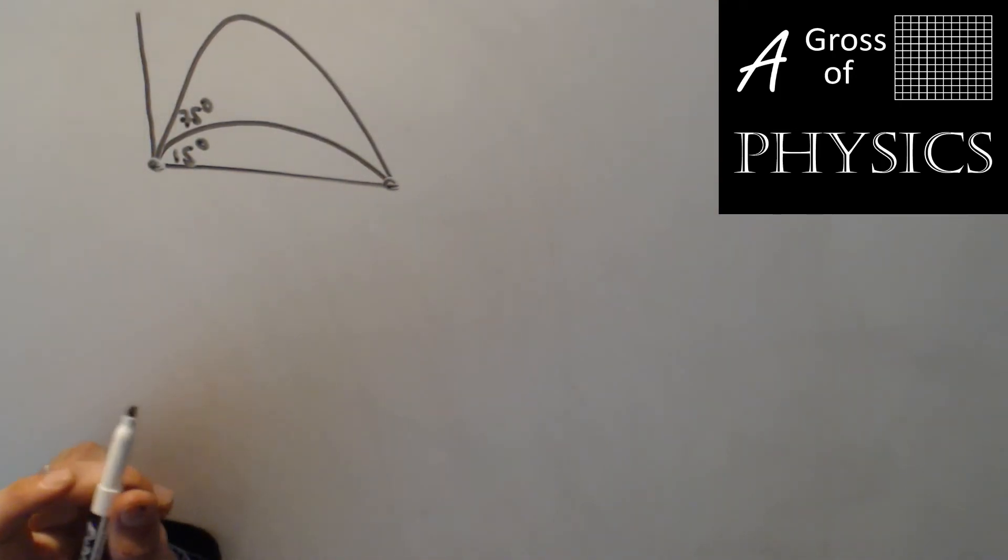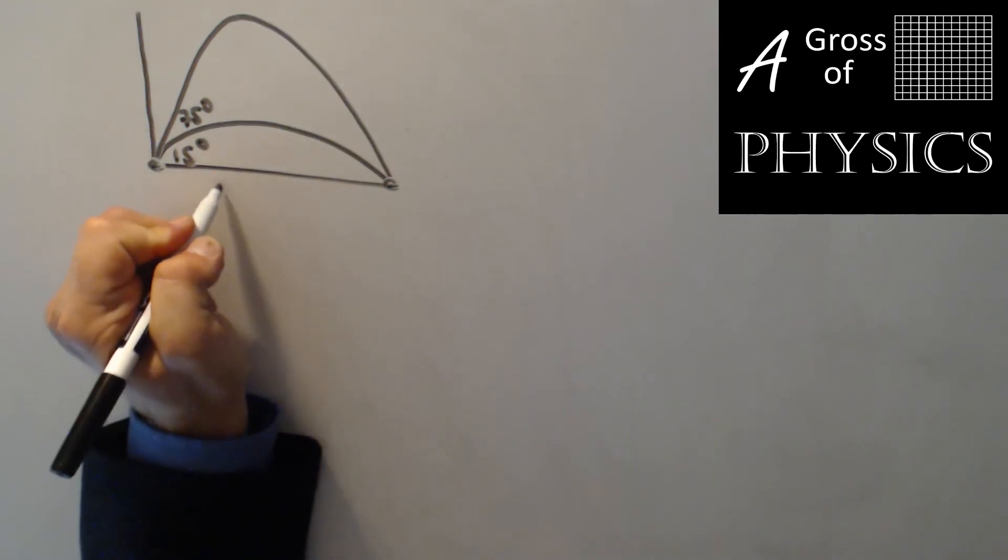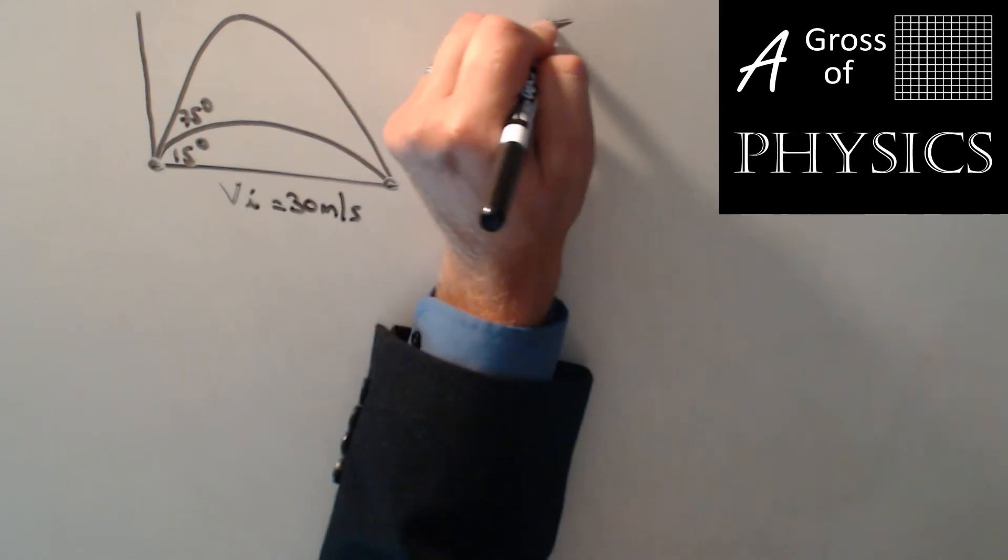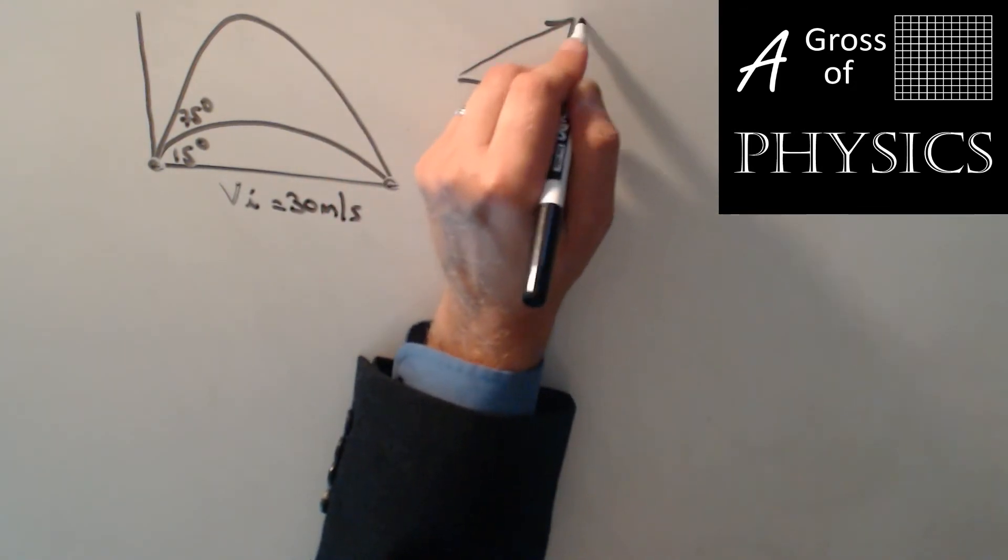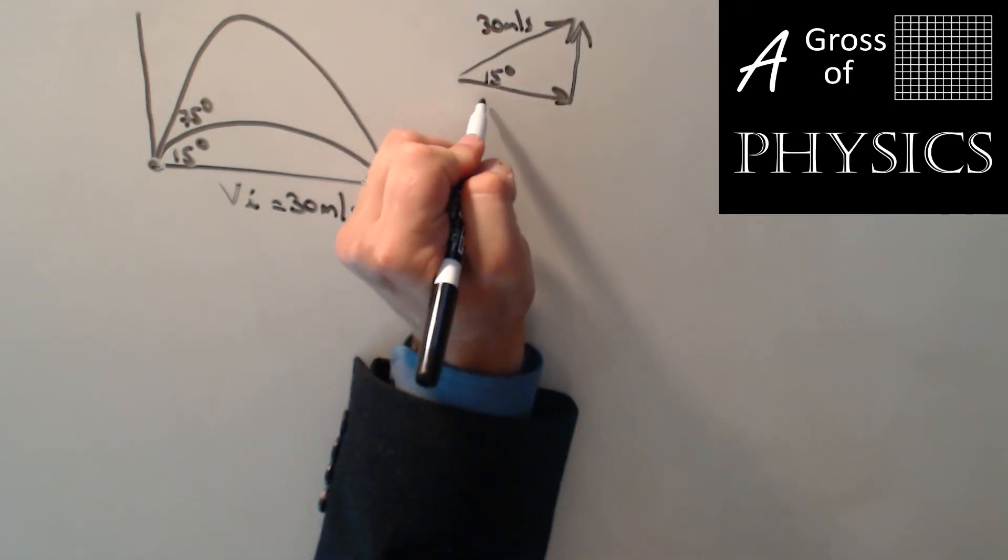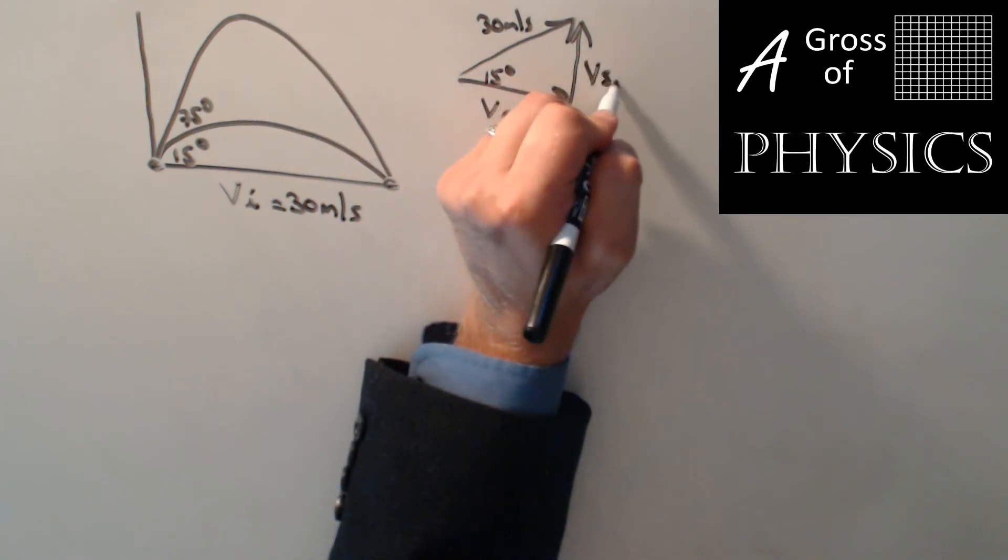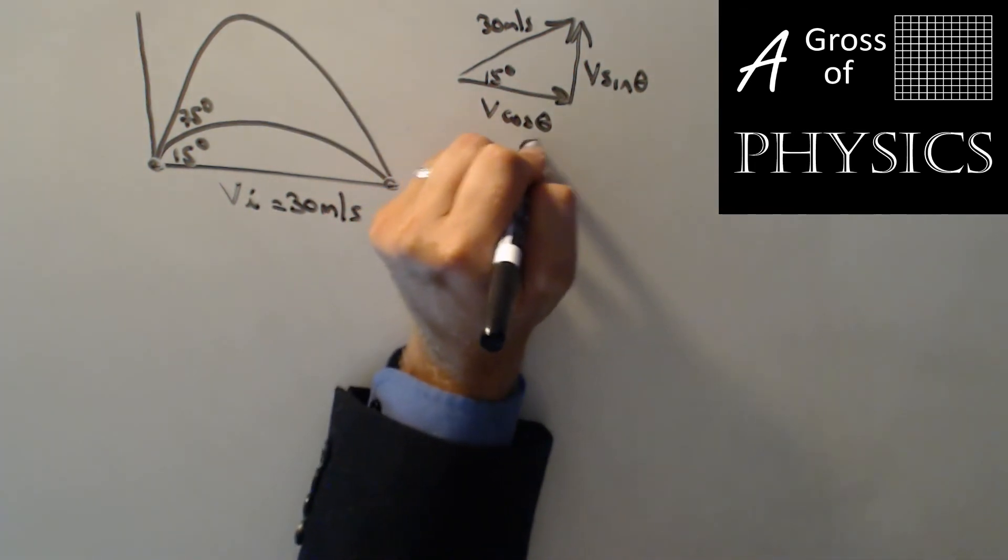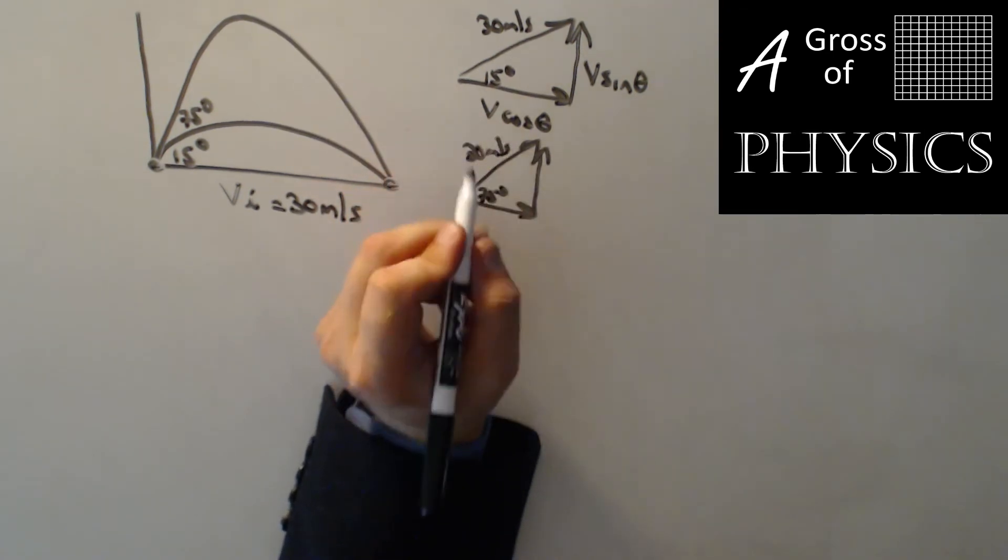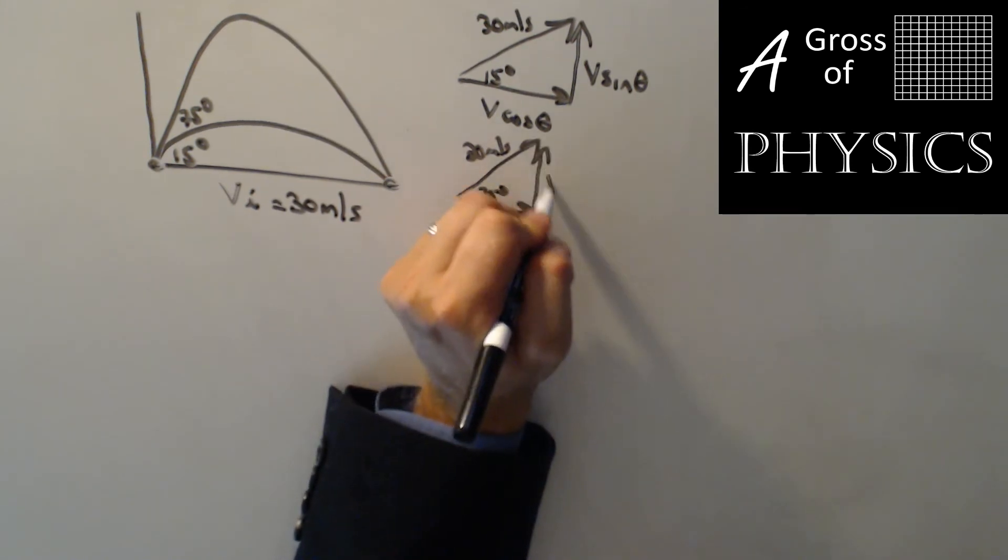All right, since we talked about complementary angles already having the same range, what I'd like to do is a calculation to verify this. And what we'll choose is an initial velocity of 30 meters per second and we'll fire a projectile at 15 degrees, fire it at 75, and see if we get the same answer for the range for each. Now of course our first step is going to be to resolve the vector into its components. We have 15 degrees, we have 30 meters per second, V cos theta for the X, V sin theta for the Y. And if we do the same thing at 75 degrees, we would do the same calculation, V cos theta, V sin theta.